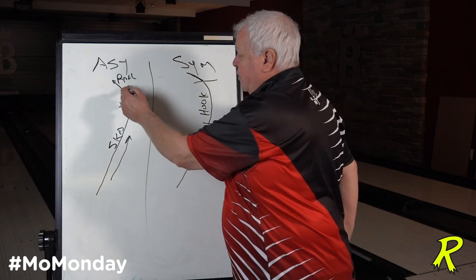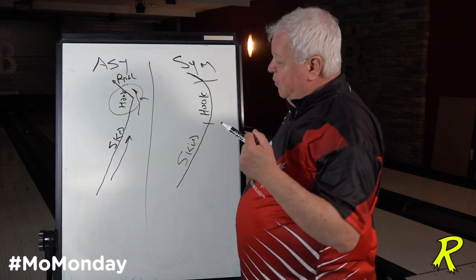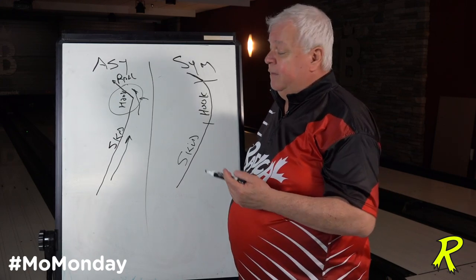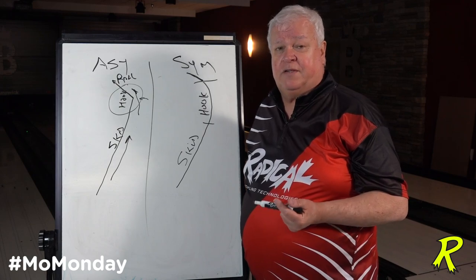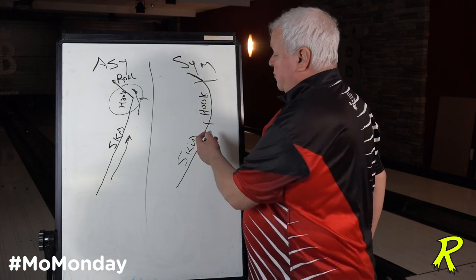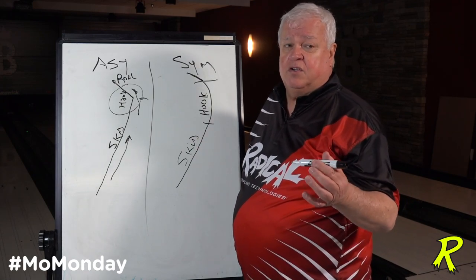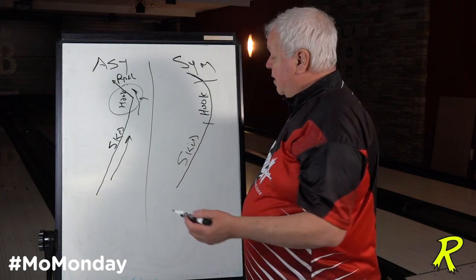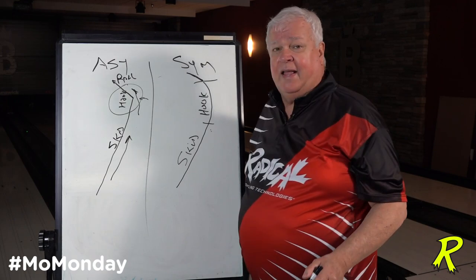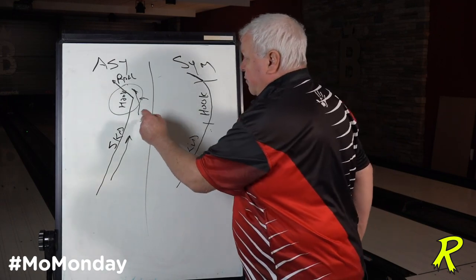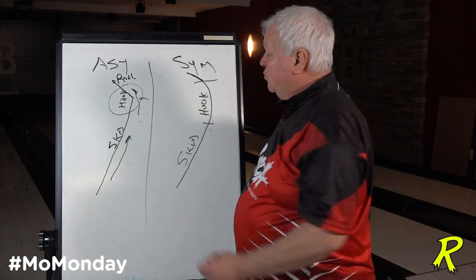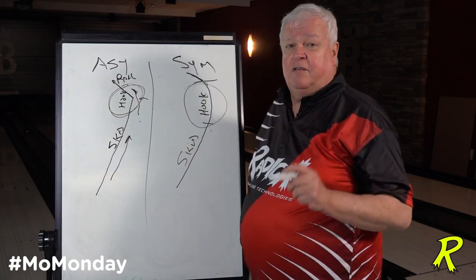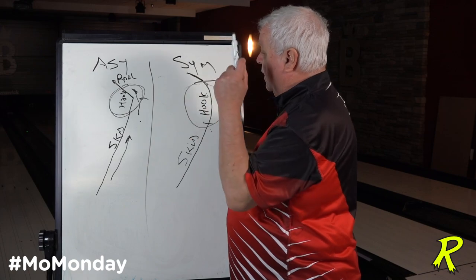In the asymmetrical case, that hook zone is sharper and quicker. So if you're not in the right spot coming off that down lane friction, that ball could roll out and you can flatten the rest of your life. A symmetrical ball may be the best because it will peel off gradually and be more continuous. But some cases, this ball won't give you enough back end to strike — you have to go to an asymmetrical ball. It's all about the length of the hook zone — that's the difference between the asymmetrical ball and the symmetrical ball.